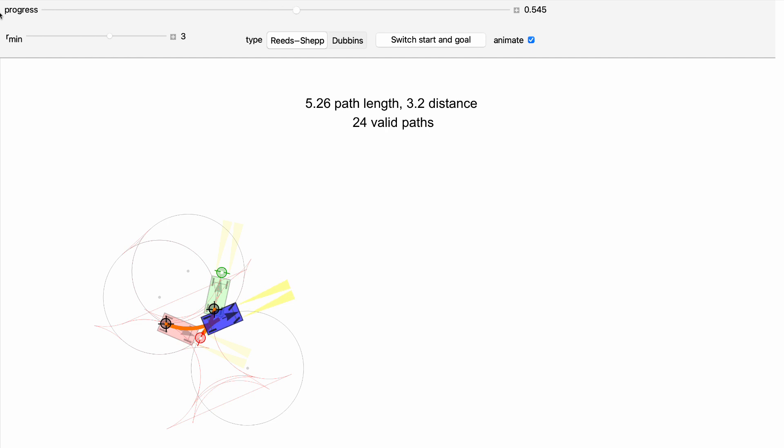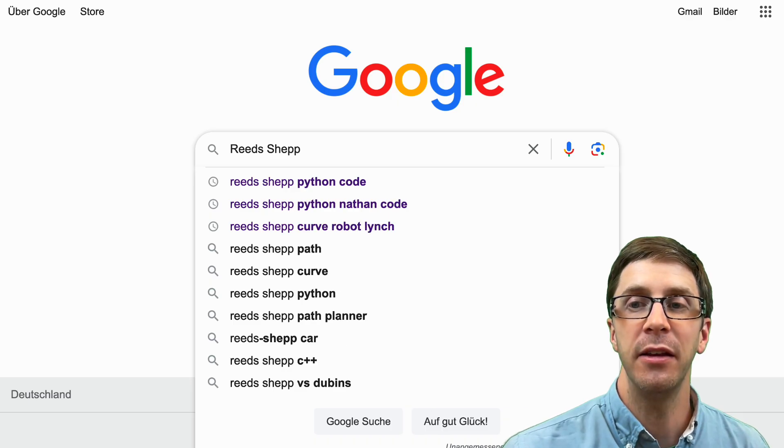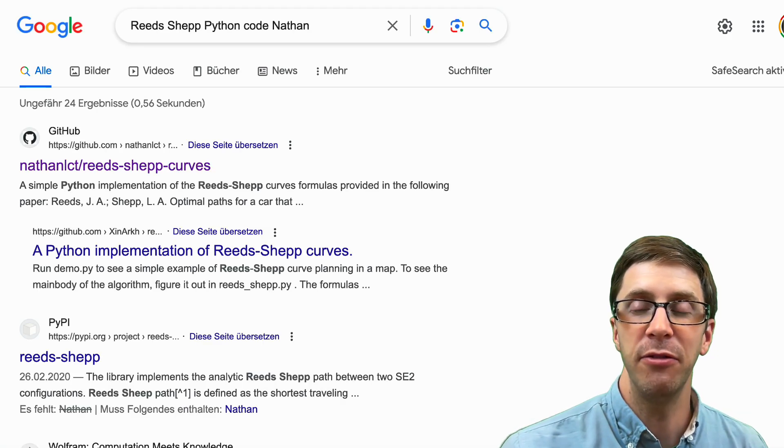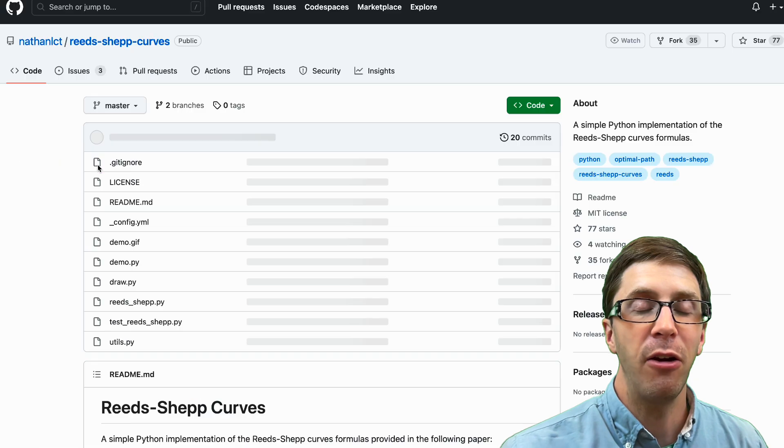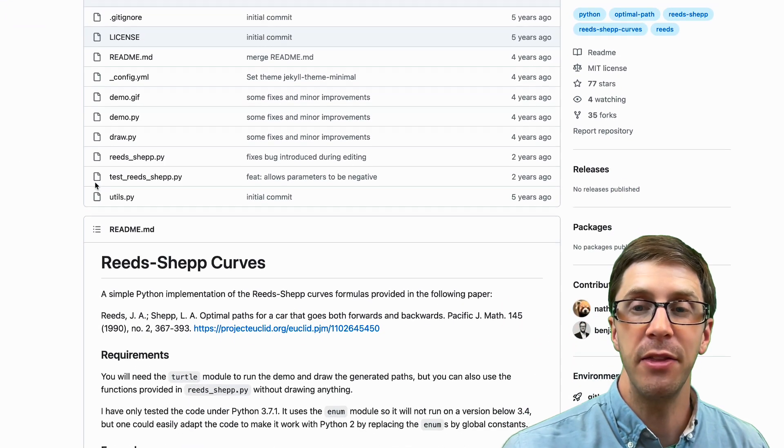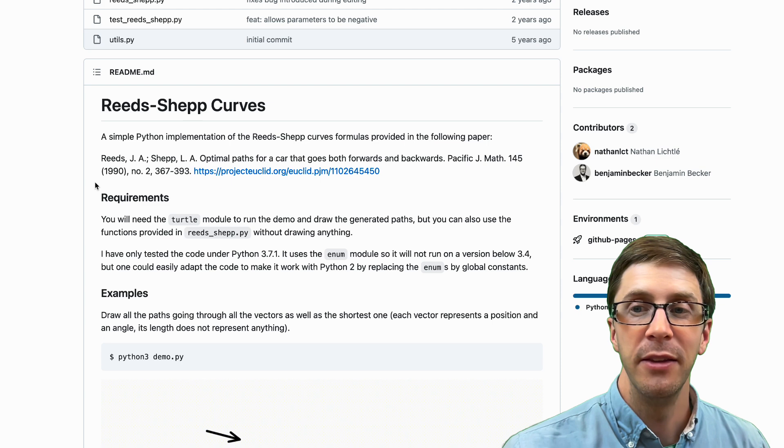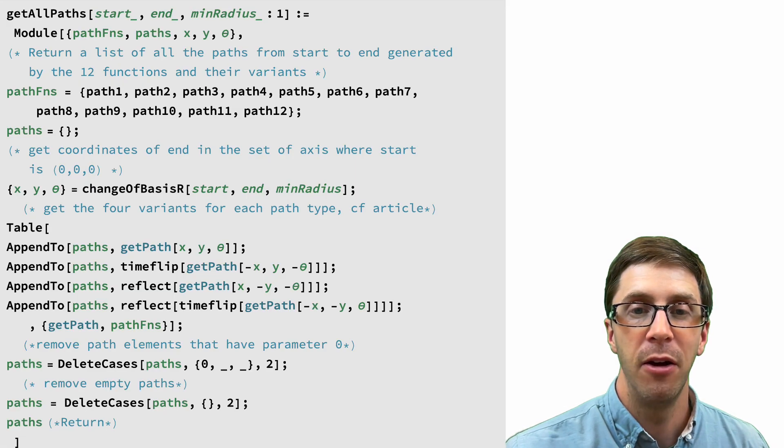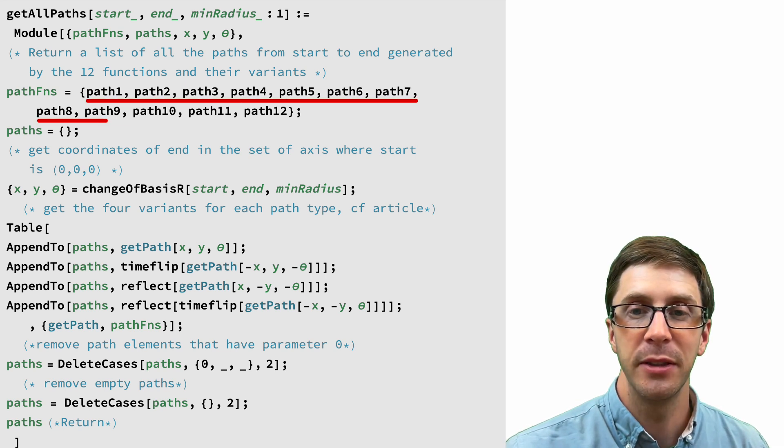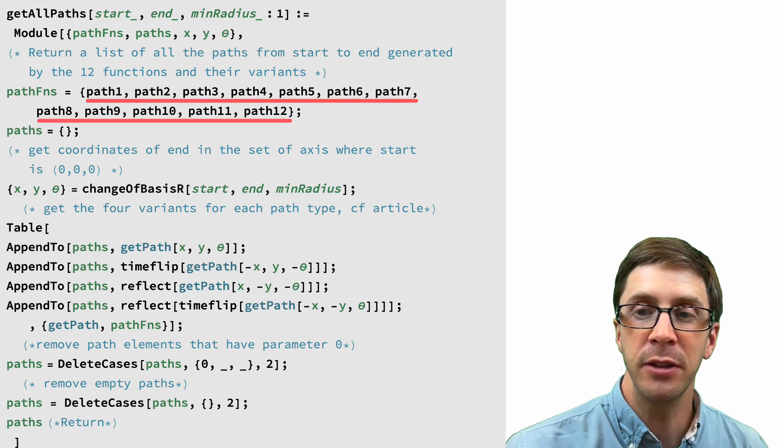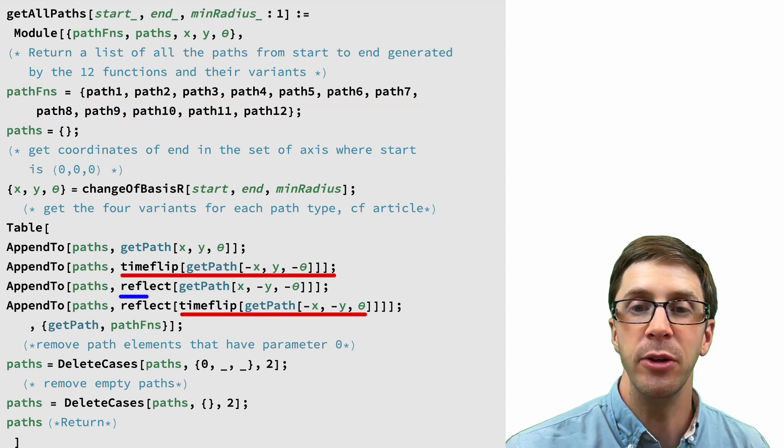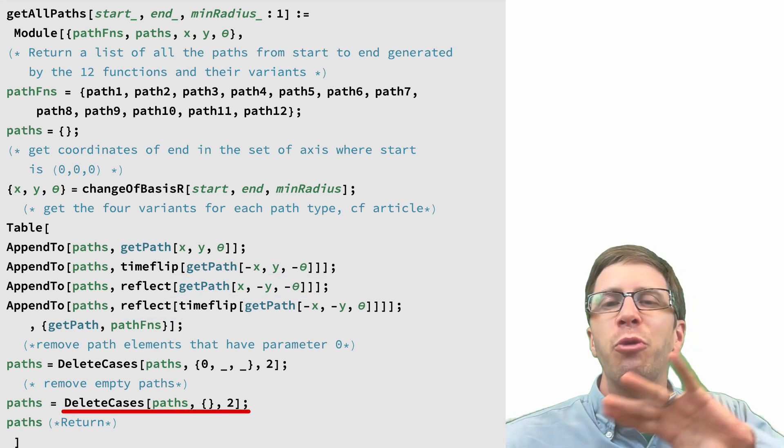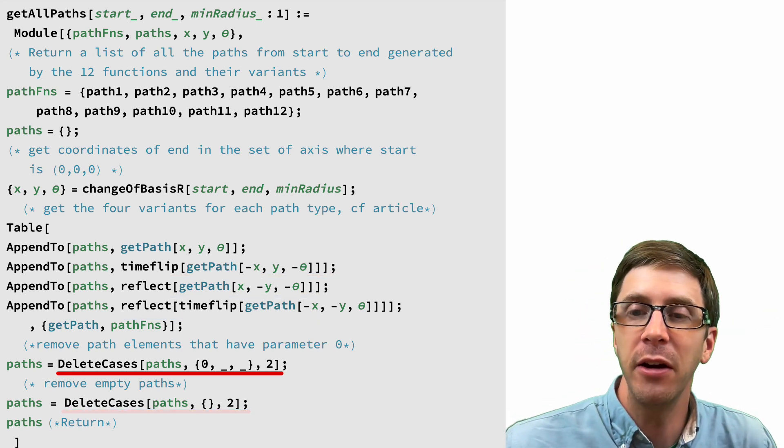Our Reeds-Shep implementation is based on the Python code by Nathan Lechel. The key thing I want to point out is that the code isn't hard to convert to your favorite language. We calculate all 48 paths, compute their links, and then pick the shortest. This isn't time-consuming because there are closed-form equations for all path types. Also, there are really just 12 path types that we then either time-reverse using the function time-flip or mirror using the function reflect. We then throw out any solutions that are empty or that are marked as invalid.